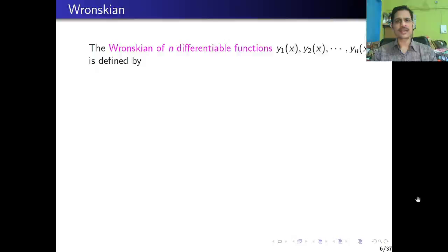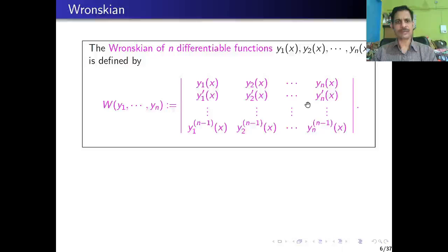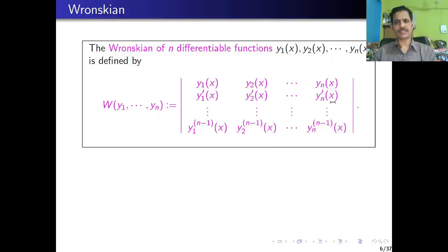The Wronskian of n differentiable functions y₁(x), y₂(x), ..., yₙ(x) is defined as the determinant of the n×n matrix whose first row is y₁, y₂, ..., yₙ; second row is y₁', y₂', ..., yₙ'; and so on, with the last row being the (n−1)th derivatives y₁⁽ⁿ⁻¹⁾, ..., yₙ⁽ⁿ⁻¹⁾.